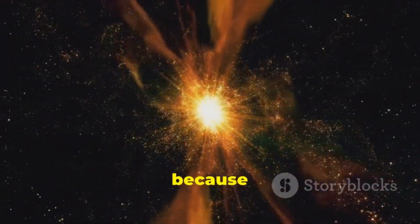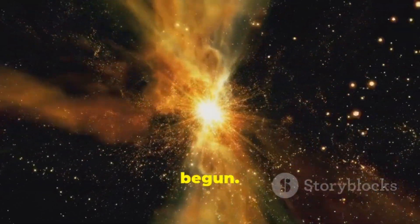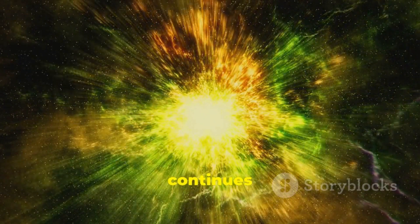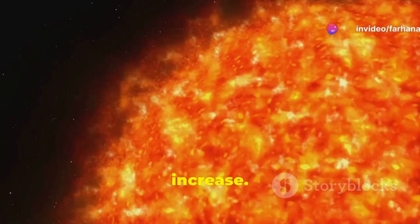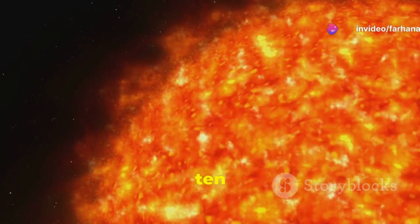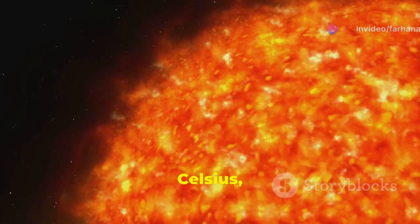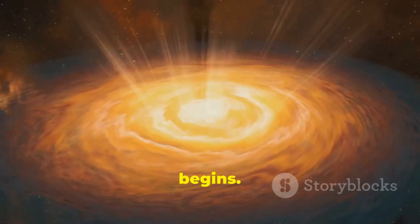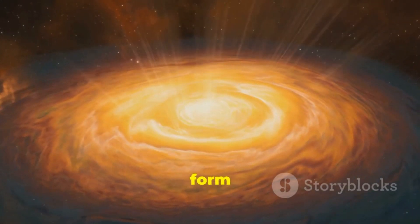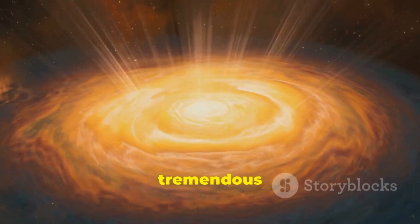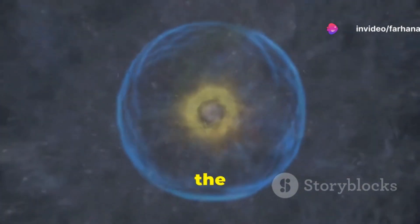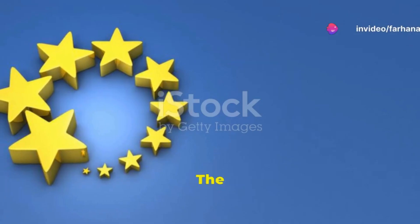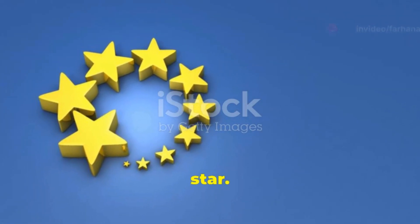It's not yet a true star because nuclear fusion hasn't begun. As the protostar continues to collapse, its core temperature and pressure increase. When the core temperature reaches about 10 million degrees Celsius, nuclear fusion begins. Hydrogen atoms fuse to form helium, releasing tremendous amounts of energy. This energy creates an outward pressure that balances the inward pull of gravity. The protostar becomes a stable star.